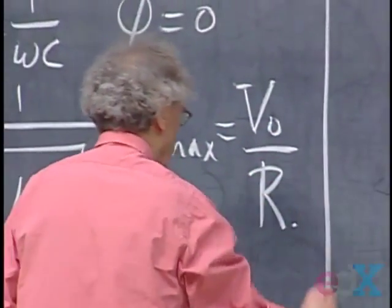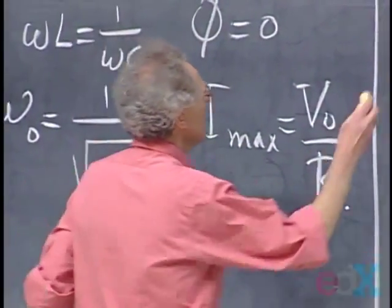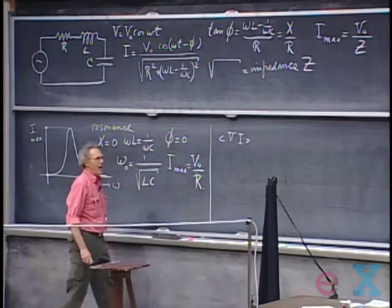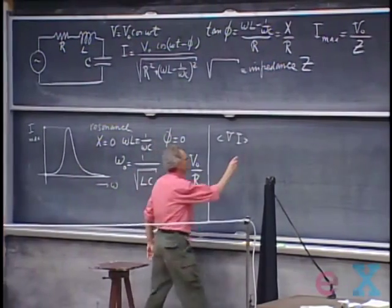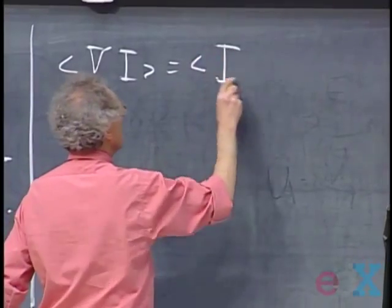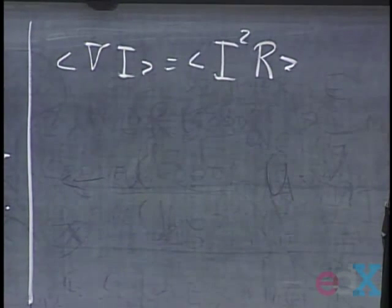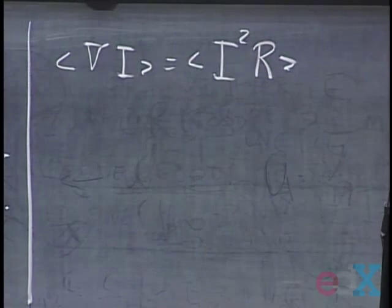Now comes the question, very important in practice, of the power generated by the power supply. That power comes out as heat in the resistor. If you time-average the power, you can take the voltage of the power supply multiplied by the current, or alternatively take the time-average of I-squared*R, because all that energy ultimately comes out as heat in the resistor. Either one will be fine.